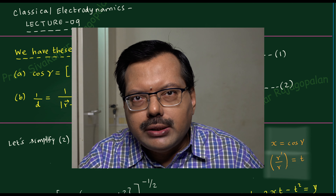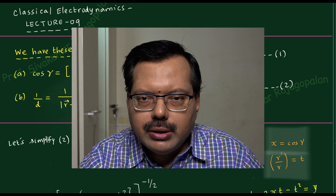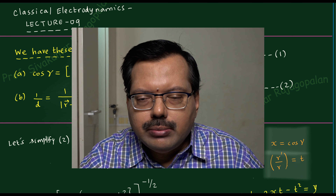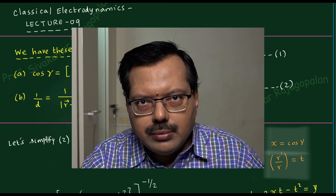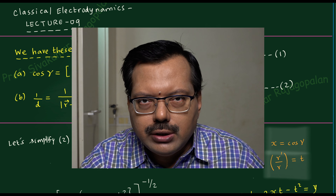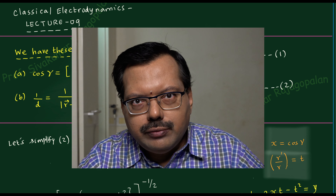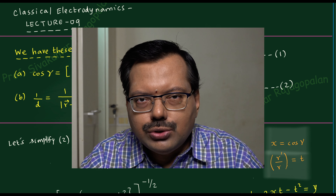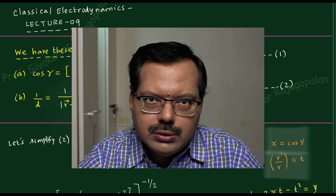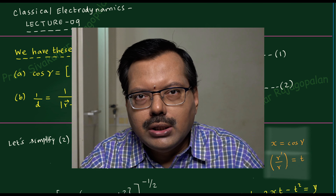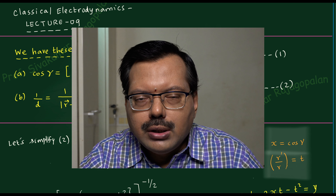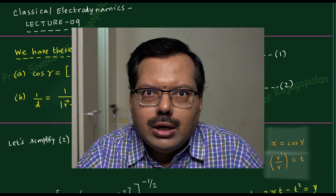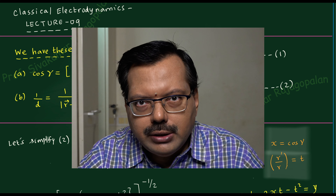Hello students, welcome back to another lecture. Today we have lecture number 9 on classical electrodynamics. We are going to discuss electric potential. We have performed some previous calculations pertaining to electric potential, namely the Green function and the solution of the Laplace equation, which are all related to the electrostatic potential. Today we discuss more on the electrostatic potential.